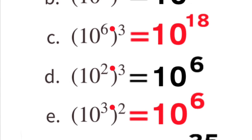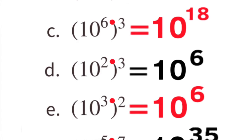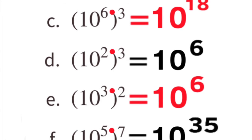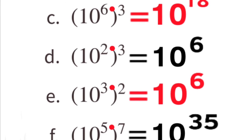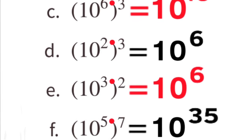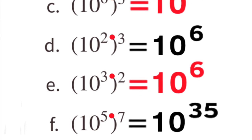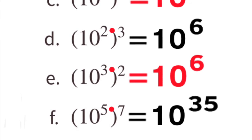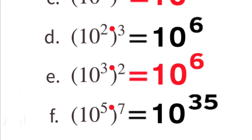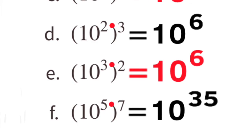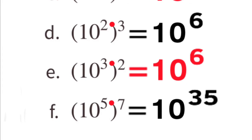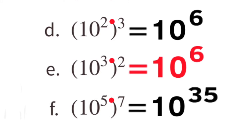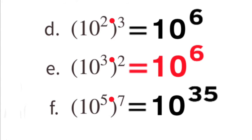Part E: exponent 3 times exponent 2 equals exponent 6, so 10 to the power of 6. And Part F: 10 to the power of 5, all to the 7th power — exponent 5 times exponent 7 equals 10 to the power of 35.